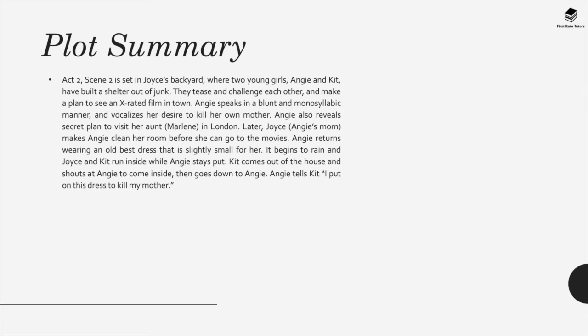Act 2, Scene 2 is set in Joyce's backyard where two young girls, Angie and Kit, have built a shelter out of junk. They tease and challenge each other and make a plan to see an X-rated film in town. Angie speaks in a blunt and monosyllabic manner and vocalizes her desire to kill her own mother. Angie also reveals a secret plan to visit her aunt in London. Later, Joyce makes Angie clean her room before she can go to the movies. Angie returns wearing an old best dress that is slightly small for her. It begins to rain; Joyce and Kit run inside while Angie stays put. Kit comes out and shouts at Angie to come inside, then goes down to Angie. Angie tells Kit, 'I put on this dress to kill my mother.'